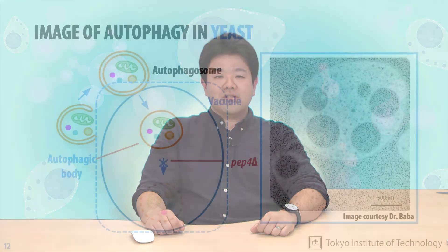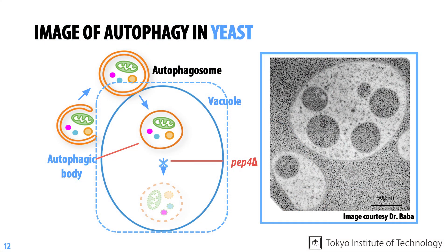In this cross-section image, this area is one of several vacuoles containing multiple autophagic bodies. We can see that the contents of the autophagic bodies are indistinguishable from the cytoplasm. This forms part of the evidence that autophagosomes randomly sequester portions of the cytoplasm under starvation conditions.